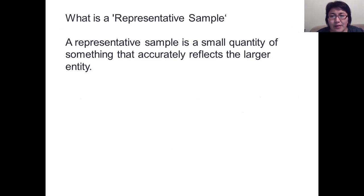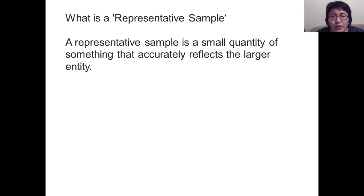Sample representativeness has the property of faithfully representing the population from which it was selected. A representative sample is a small quantity of something that accurately reflects the larger entity. For example, in a group of 30 students in which half are male and half are female, a representative sample might include 6 students — 3 males and 3 females.